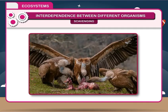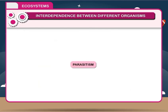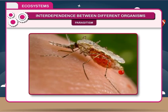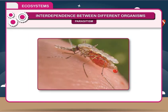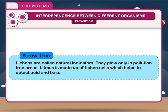Scavenging: Scavengers play a very important role in the ecosystem as they clean the environment. Scavengers eat the dead and decaying bodies of other animals. Parasitism: A typical parasite lives inside the host. Parasitism is an interaction between two species in which one obtains its food from the host body. Know this: Lichens are called natural indicators. They grow only in pollution-free areas. Litmus is made up of lichen cells, which help detect acid and base.